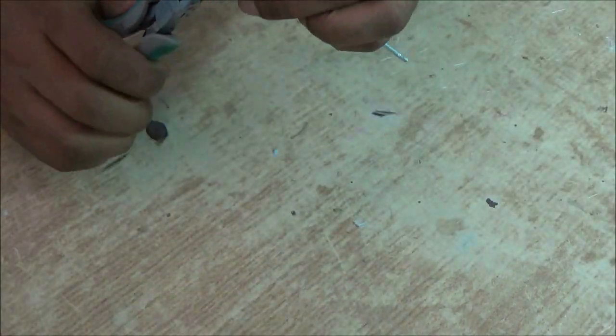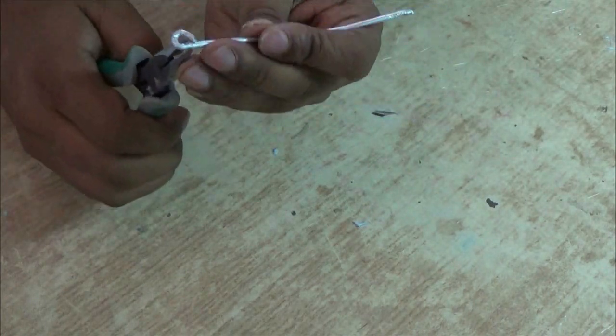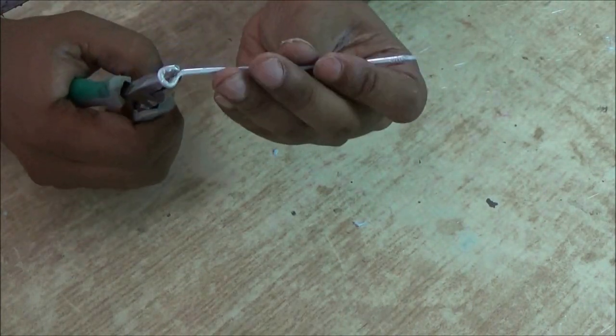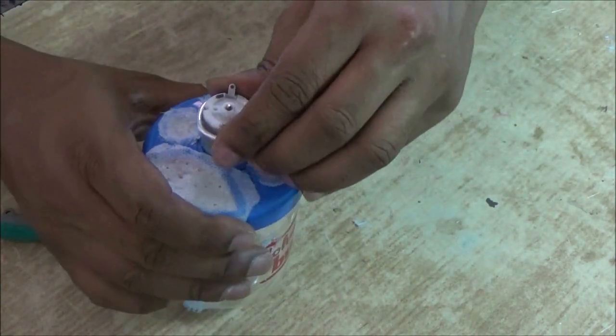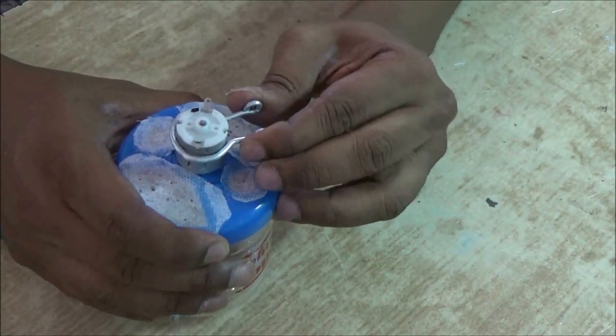Now take an aluminum wire and turn it like this to make a clamp which we can use around the DC motor to attach it with a handle.